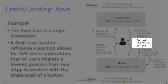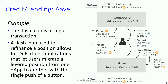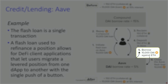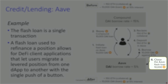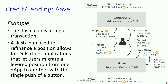Step four: deposit the 150 ETH in Aave and use it as collateral to borrow 10,000 DAI at 5%. Step five: use that DAI to close the flash loan at 10,000. This is extremely interesting because it is a single transaction with many steps, and it shows the possibility of going from one DeFi Lego to another — in this case, using both Compound and Aave.